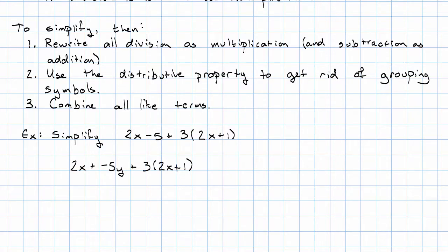Next I'm going to use the distributive property to get rid of my grouping symbols. All the action right now is in this term here. I can rewrite this off to the side. 3 times the quantity 2x plus 1 is 3 times 2x plus 3 times 1, which is 6x plus 3.